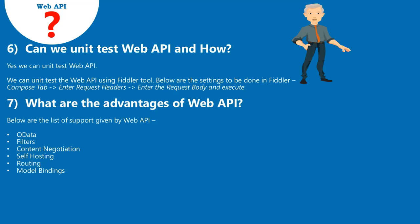Question 6: Can we unit test Web API and how? Yes, we can unit test Web API. We can unit test Web API using the Fiddler tool. Below are the settings to be done in Fiddler: Compose tab, enter request headers, enter the request body, and execute.